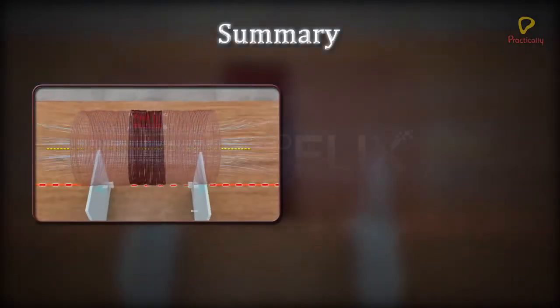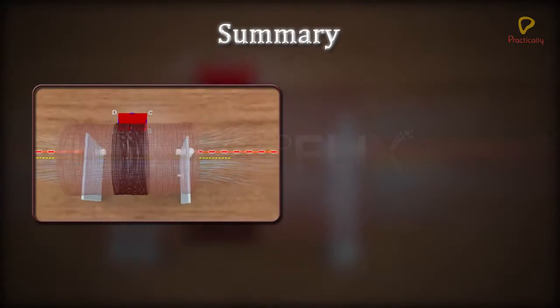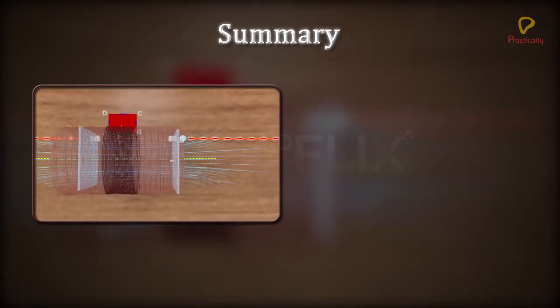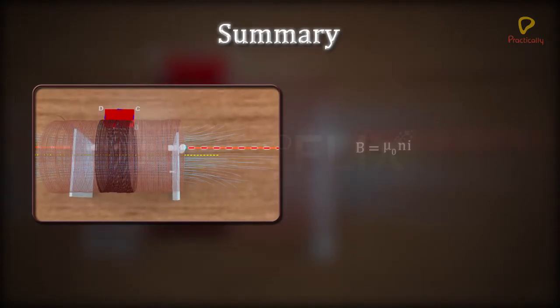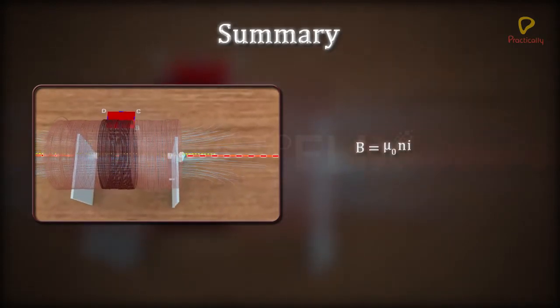Summary: Magnetic field inside a solenoid that has n turns per unit length and through which current i passes is given by B equals μ₀ni.